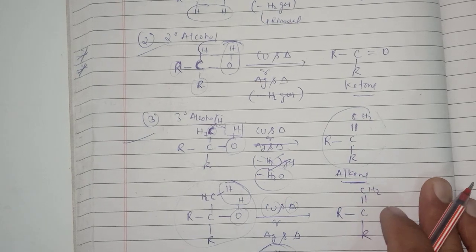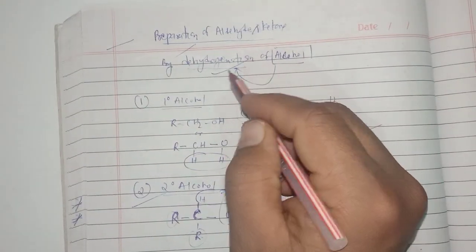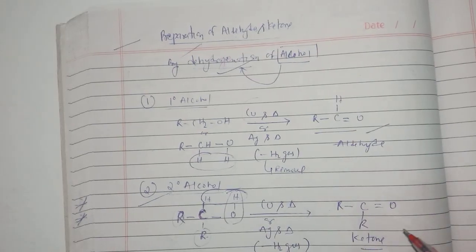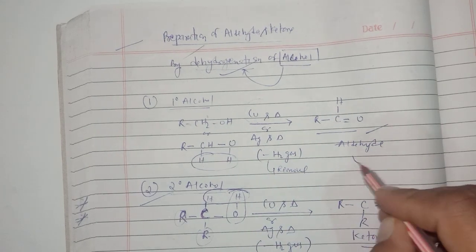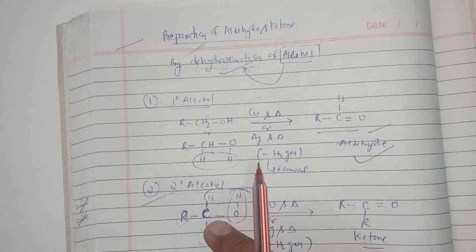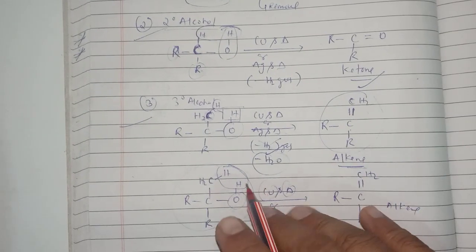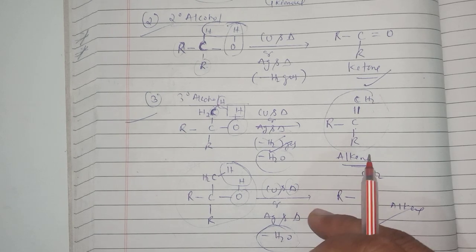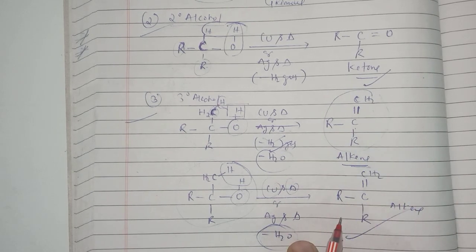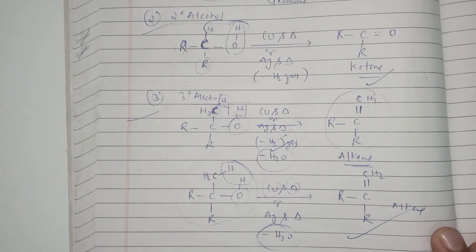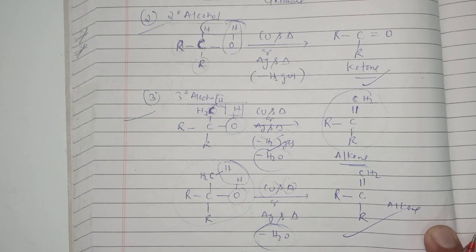So three things we come across: when alcohol undergoes dehydrogenation, in case of one-degree alcohol it leads to the formation of aldehyde; in case of two-degree alcohol it leads to the formation of ketone; and for three-degree alcohol it leads to the formation of alkene — because it is actually removal of water molecule, not hydrogen. The reagents used are copper in the presence of heat or silver in the presence of heat. Thank you.